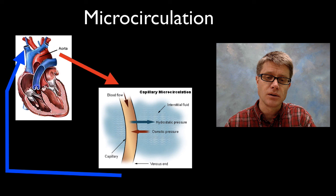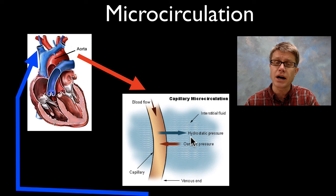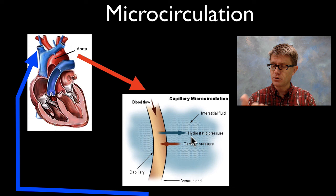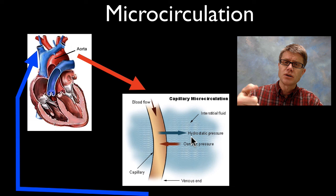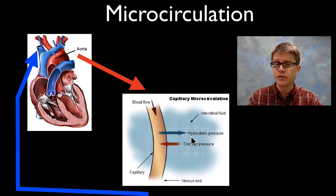As blood flows away from the heart it works its way down to the capillary. What holds the pressure inside a capillary? There's going to be hydrostatic pressure — the pressure pushing outward on the capillary. Think of playing with a hose in a water fight: if you put your finger on the front you increase the pressure and squirt it farther. That pressure on the inside of the capillary is hydrostatic pressure, and it moves fluid outside the capillary into the surrounding interstitial fluid.